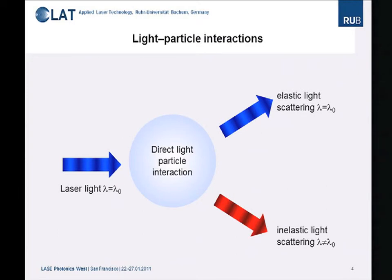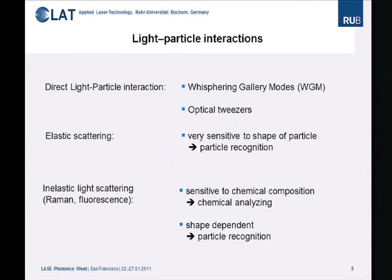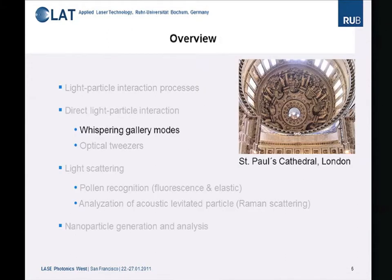When we illuminate particles with light of wavelength lambda, we observe elastic light scattering and inelastic light scattering where the wavelength changes. Within the particle itself we have direct light-particle interactions, which can involve whispering gallery modes. Optical tweezers are used in this direction as well. For elastic scattering, we see very sensitive behavior regarding the shape of the particle, useful for particle characterization and recognition. Inelastic light scattering can be used for chemical composition analysis and shape detection — particularly Raman and fluorescence.